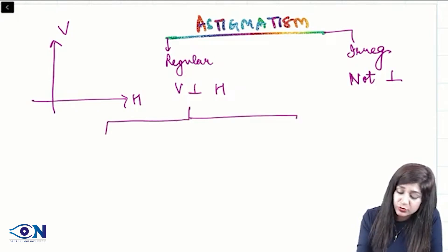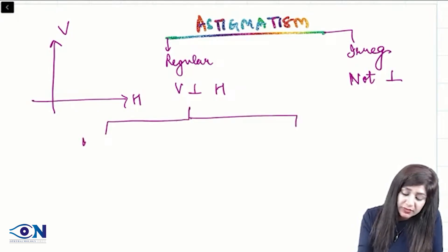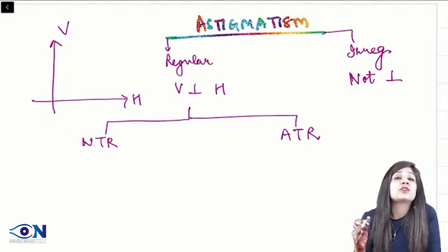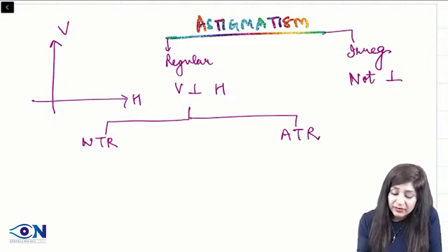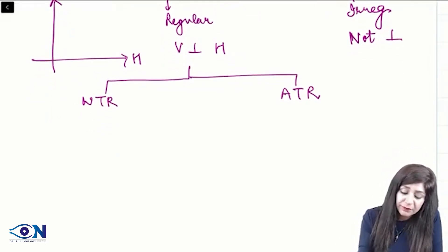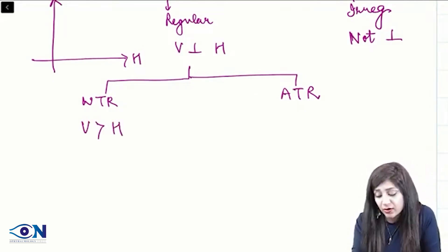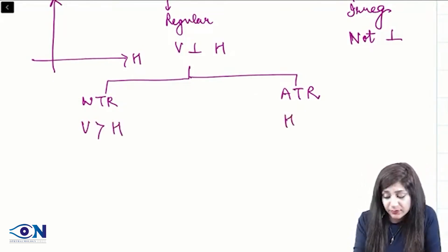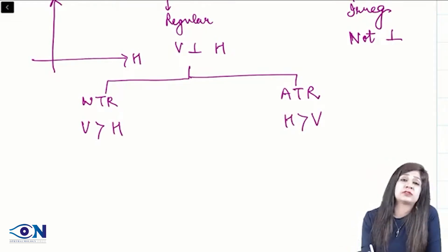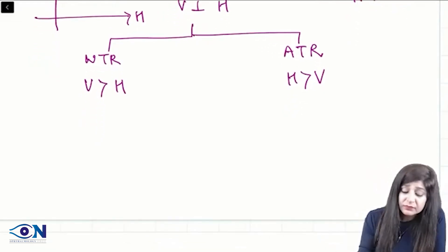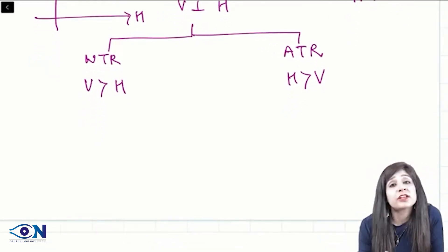Regular astigmatism can be further divided into with-the-rule astigmatism and against-the-rule astigmatism. With-the-rule means the vertical power is more than the horizontal power. Against-the-rule means horizontal power is more than the vertical power.